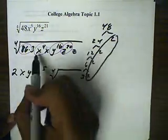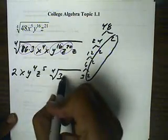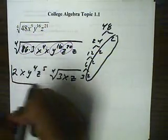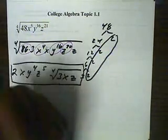Now what's left in the root will be the 3, the x, and the z. And this will be your final result.